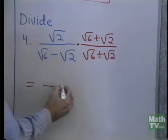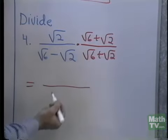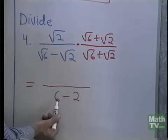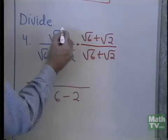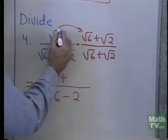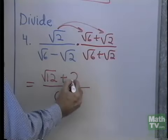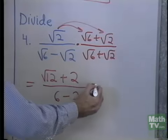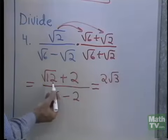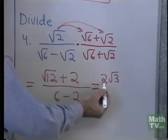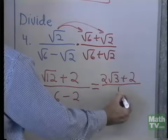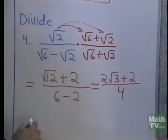So when I multiply, in the denominator, multiplying these two conjugates I'm going to have 6 subtract 2. That's square root 6 squared, which is 6, minus square root 2 squared, which is 2. In the numerator, I multiply and get square root of 12 plus square root 2 times square root 2, which is just 2. Square root 12 in simplified form is going to be 2 square root 3, because 12 is 4 times 3 and the square root of 4 is 2. So that gives us 2 square root 3 plus 2, all divided by 6 subtract 2, which is 4. This expression I can reduce to lowest terms.